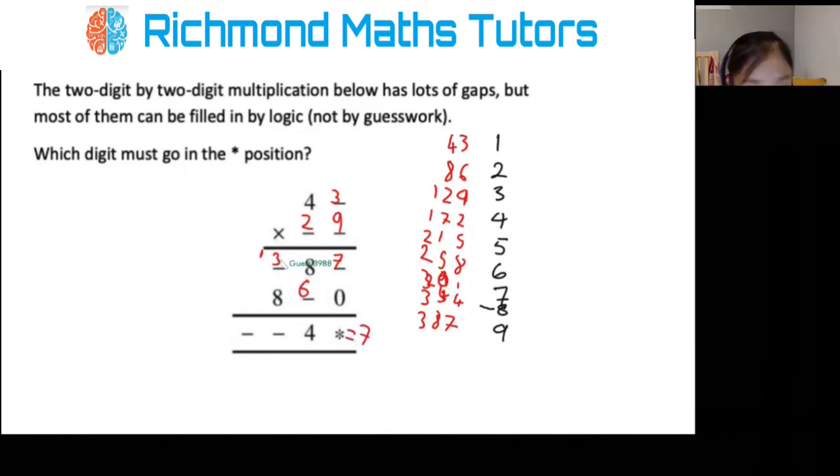And if we want to work out the rest, three plus eight, eleven, plus the extra one, twelve. So, which means it's one thousand, two hundred and forty-seven equals forty-three times twenty-nine.